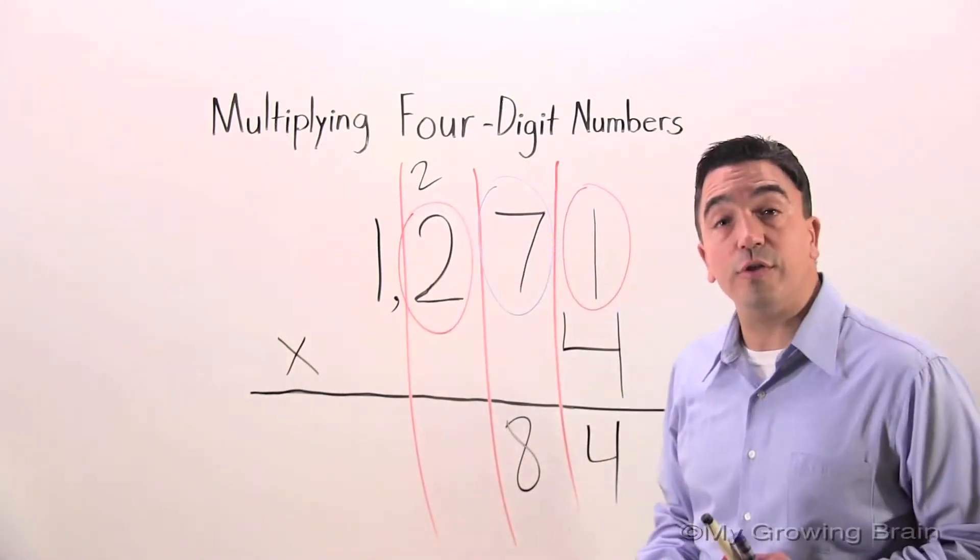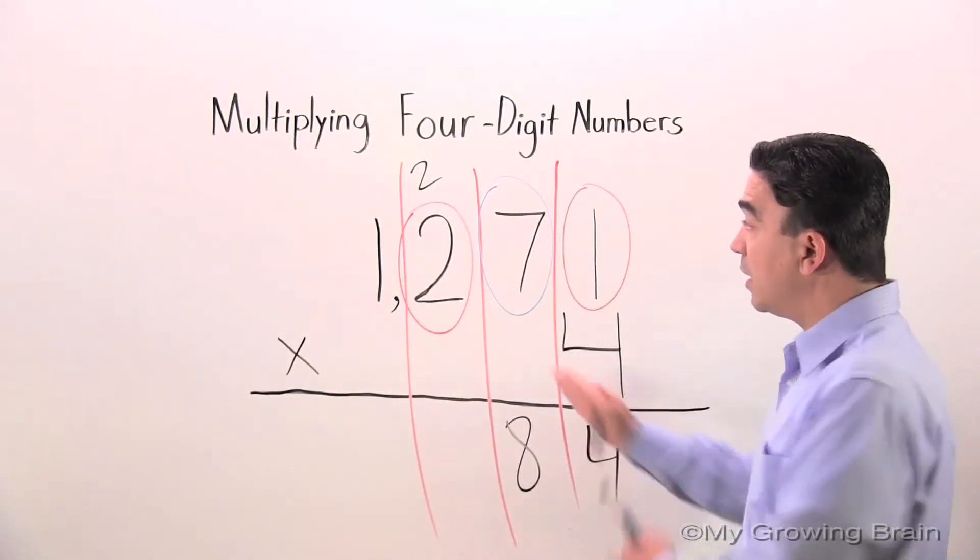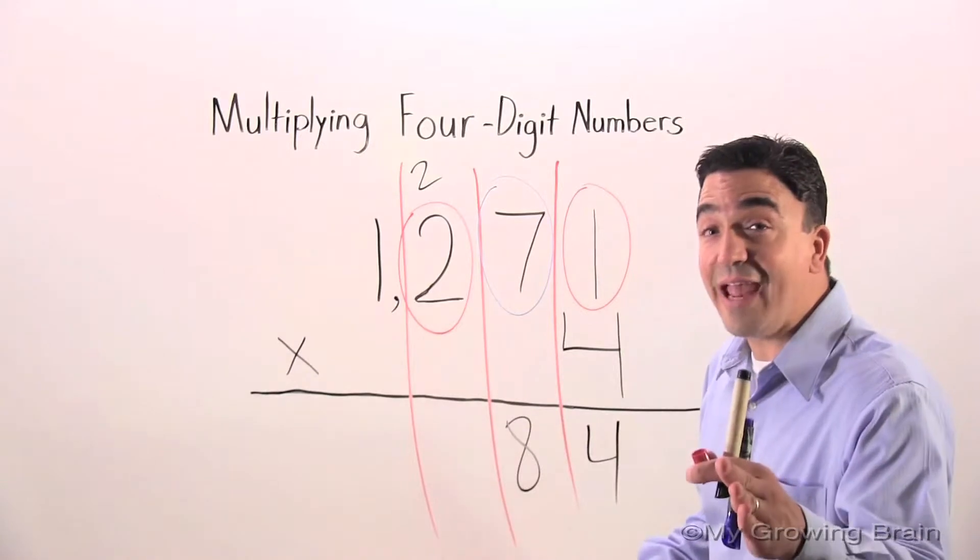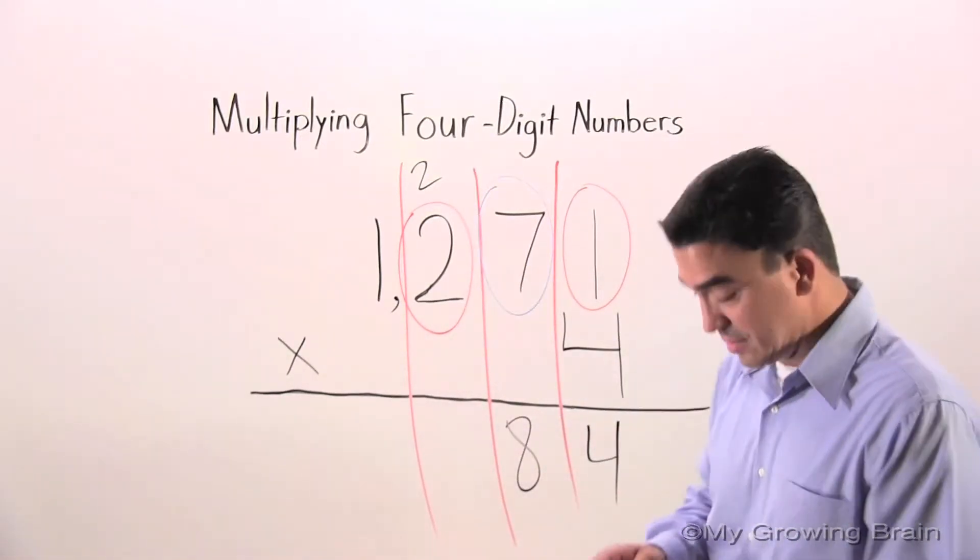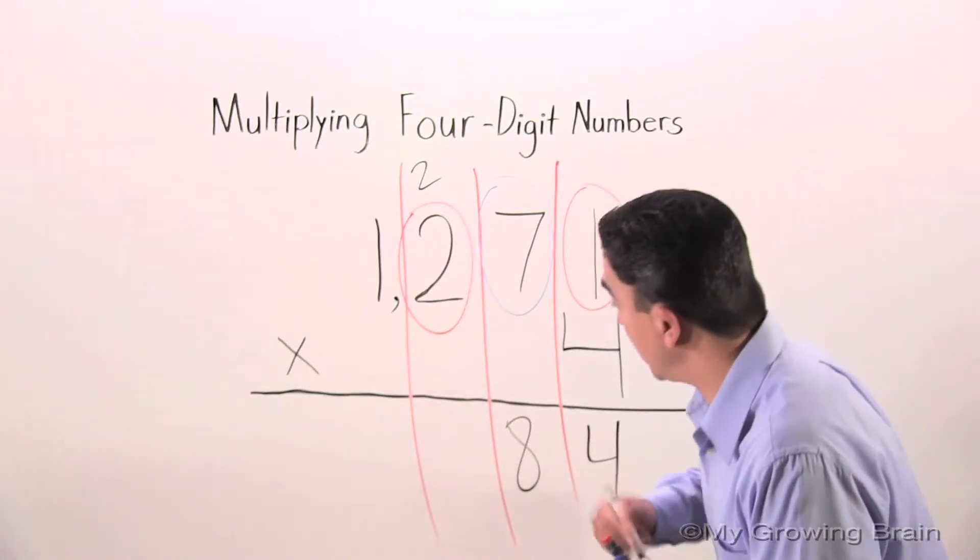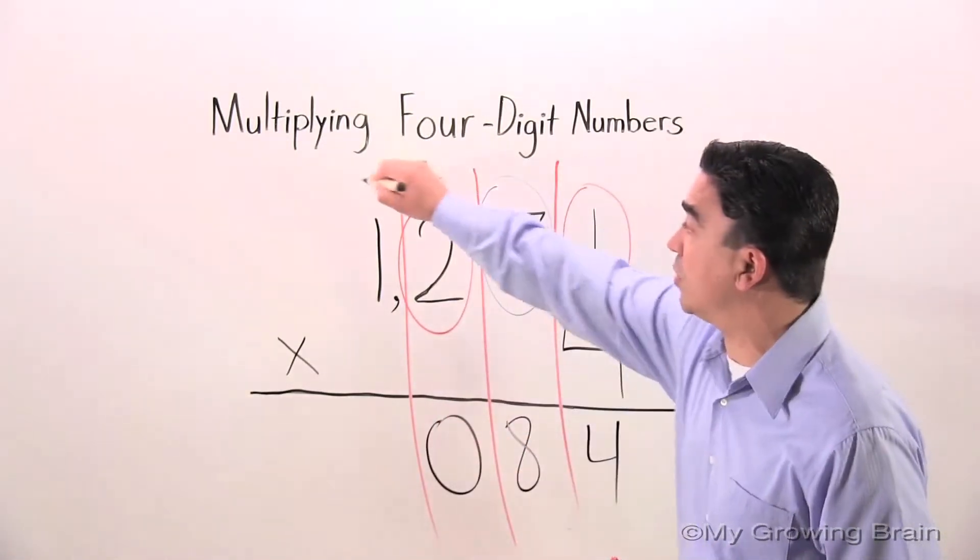And I'm going to circle the two. Four times two is eight. Plus two, ten. Two-digit number again. So therefore, I'm going to regroup my one.